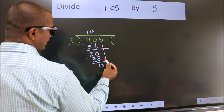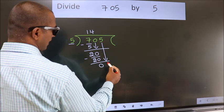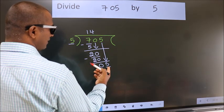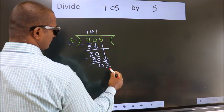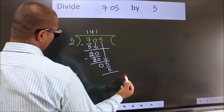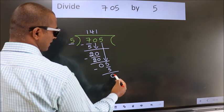After this, bring down the beside number. So, 5 down. So, 5. When do we get 5? In 5 table. 5 once 5. Now, we subtract. We get 0.